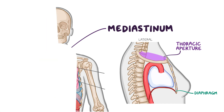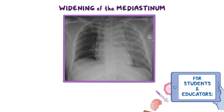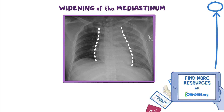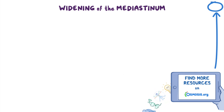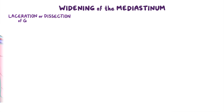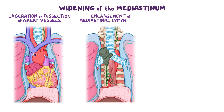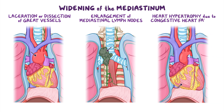First up, there's widening of the mediastinum, which can be seen on a chest x-ray. Since the mediastinum contains so many structures, each of them can contribute to pathological widening. It can be observed after a trauma that causes laceration or dissection of the great vessels, typically the aorta, which can cause hemorrhaging into the mediastinum. Other times, malignant tumors such as lymphomas can produce massive enlargement of mediastinal lymph nodes and widening of the mediastinum. Another cause of mediastinal widening is heart hypertrophy due to congestive heart failure.